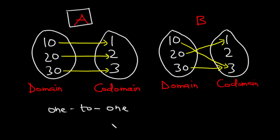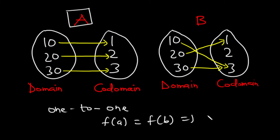This can be expressed mathematically as f(A) = f(B) implies A = B.